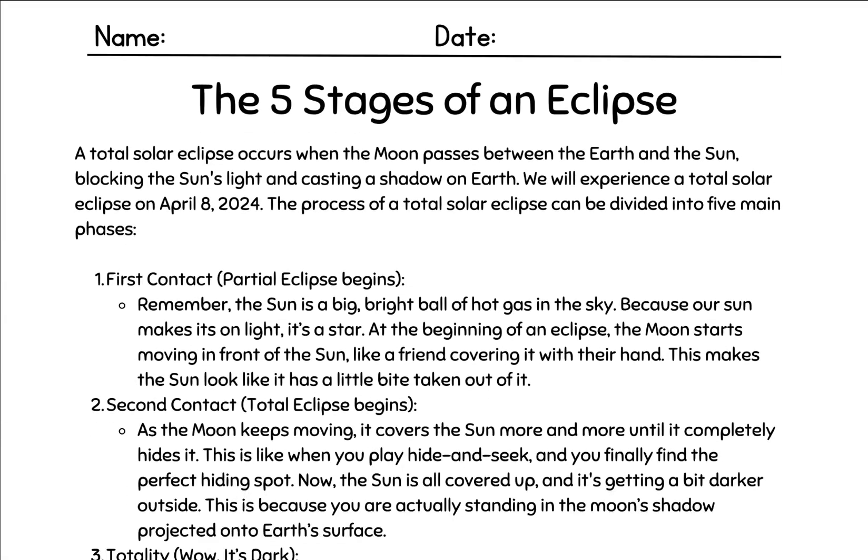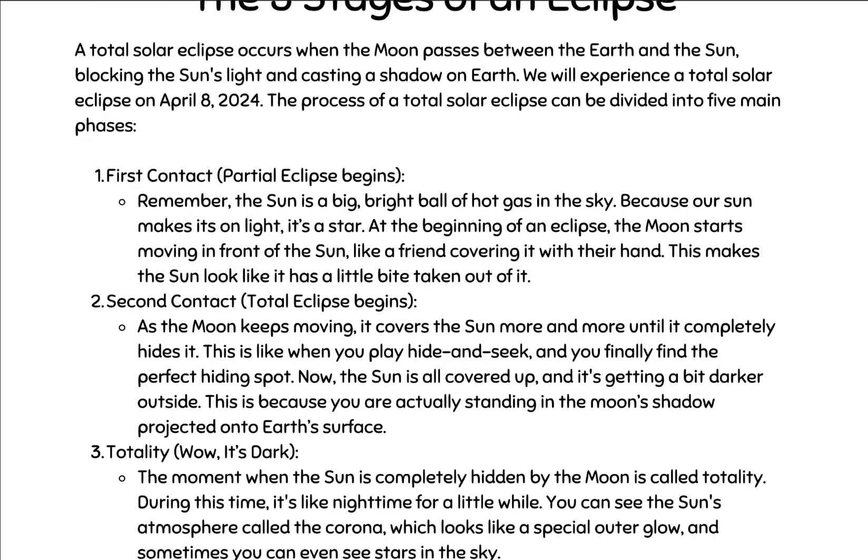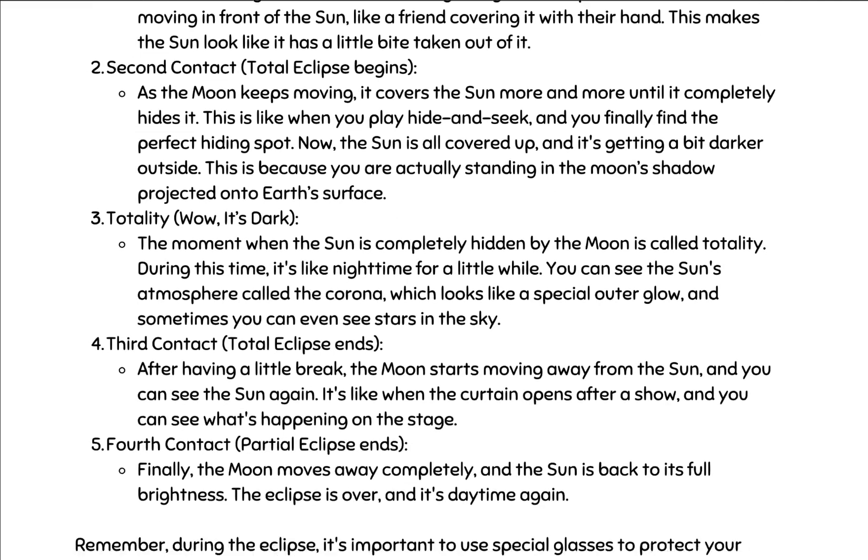We have two reading passages geared toward different levels of students. The first is for our lower elementary students — a quick passage that you will need to read with them, like our pre-K and kinder students who would struggle with some of the larger words and terms. It goes through the different stages of the eclipse and was created with ChatGPT.